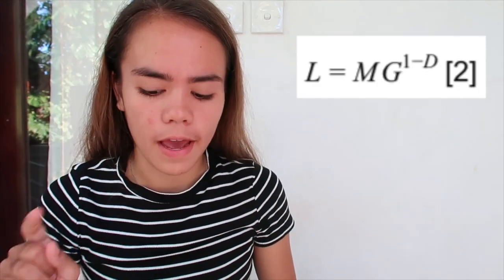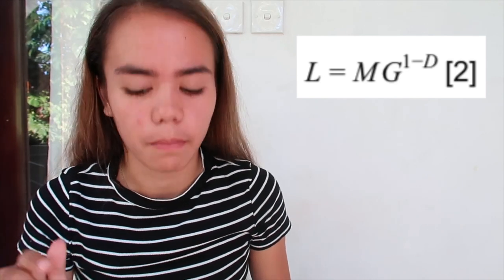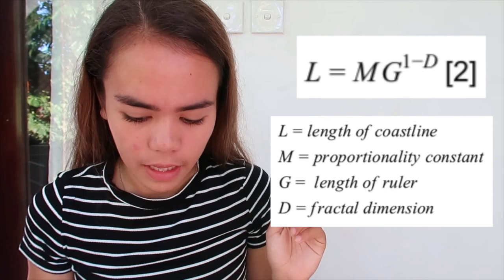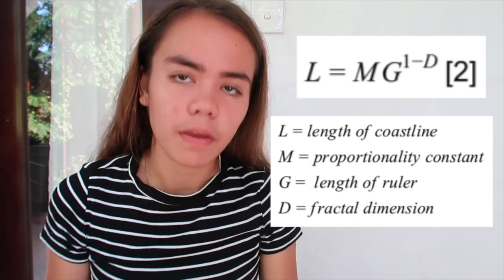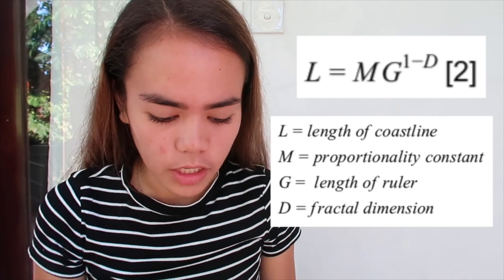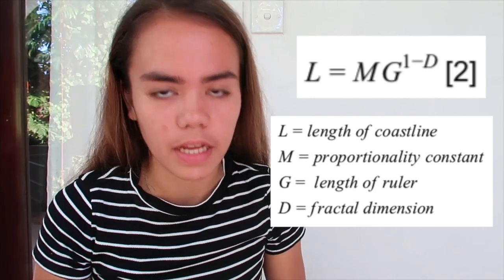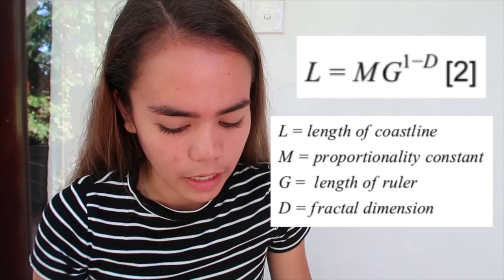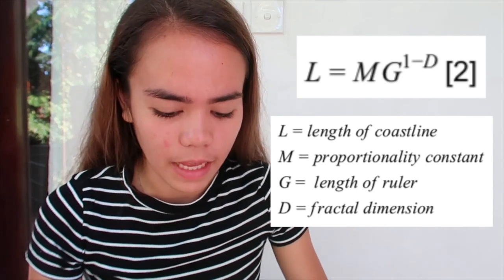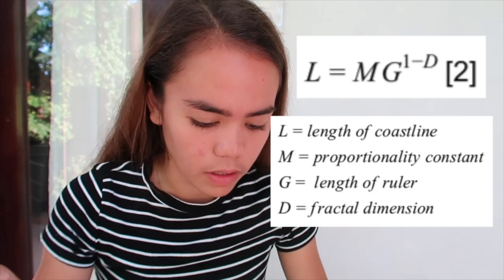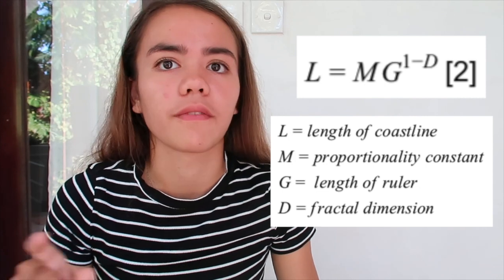So the question comes down to: how can you actually calculate this number? You can do that quite simply using various different methods. This is actually a theory that Mandelbrot proposed in his paper, and you can read that if you want. The important thing about his paper is that he gave this equation: L equals M times G to the power of 1 minus D. L is the length of the coastline, M is just a proportionality constant, G is the length of the ruler, and 1 minus D involves the fractal dimension. Don't worry, this isn't as complicated as it may seem.